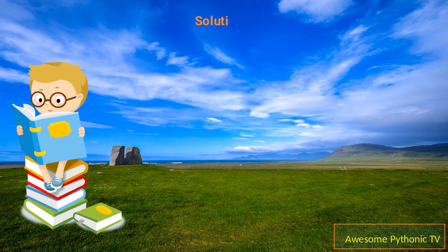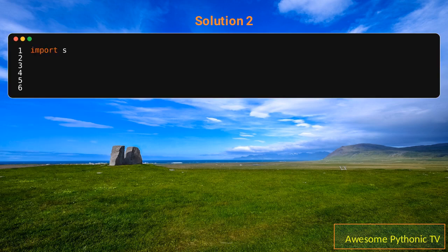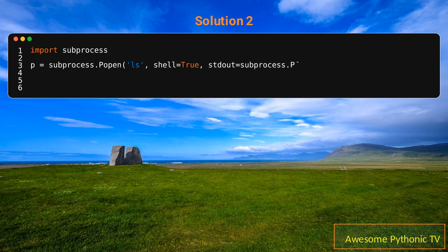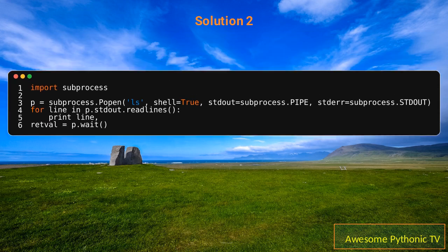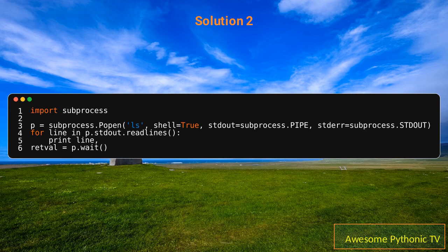Solution 2: Typical implementation. You are free to do what you want with the stdout data in the pipe. In fact, you can simply omit those parameters — stdout and stderr — and it will behave like os.system.